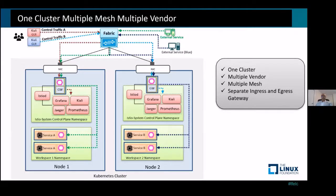In the third pattern, we again have a single Kubernetes cluster with CNFs from different vendors, but now we have a dedicated service mesh for each vendor and its CNFs in their own namespace within the single Kubernetes cluster. The ingress and egress gateways are also separate for each CNF.